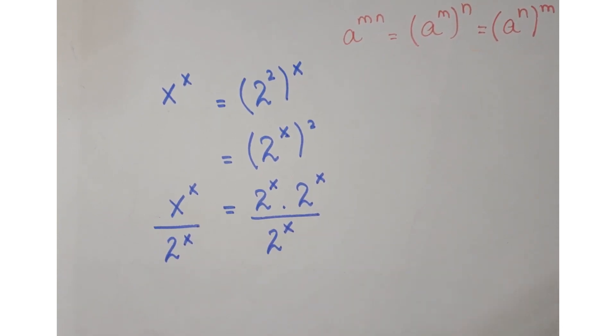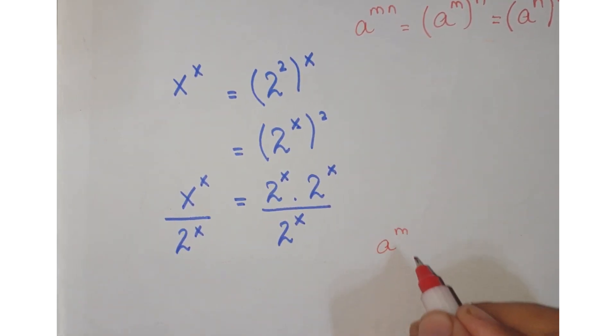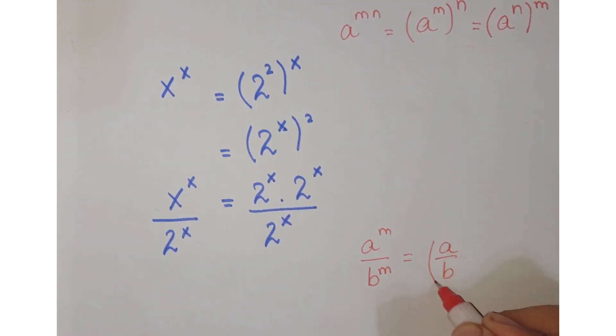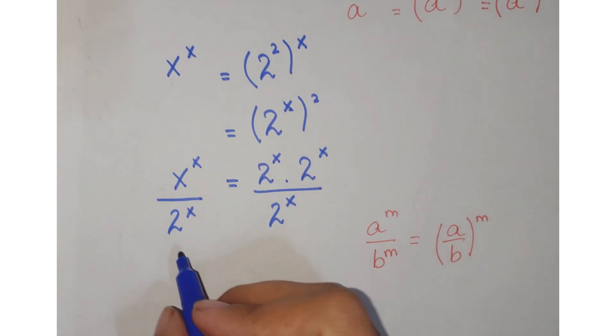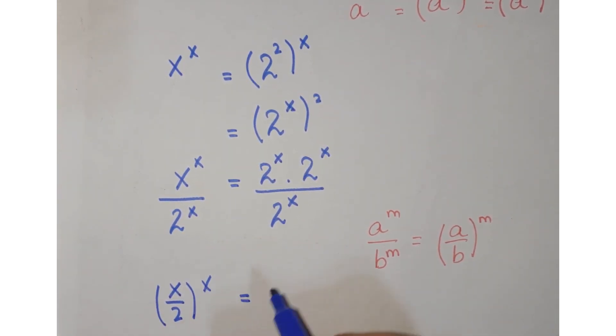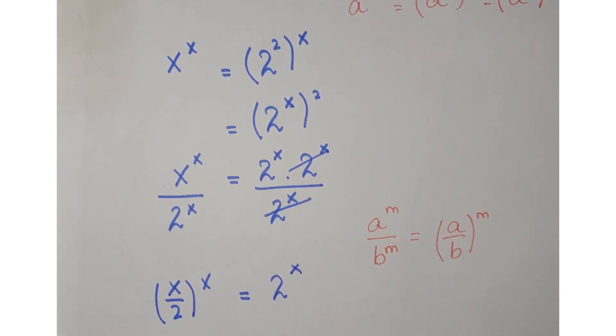Now as you know that a to the power m upon b to the power m can be written as a upon b, whole to the power m. So just write this as x upon 2, whole to the power x, is equal to this term and this term get cancelled, so we have 2 to the power x.